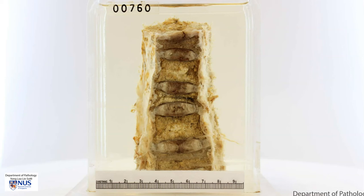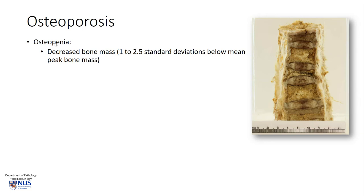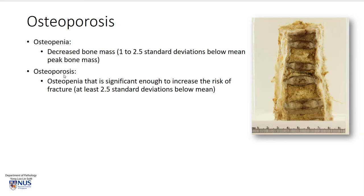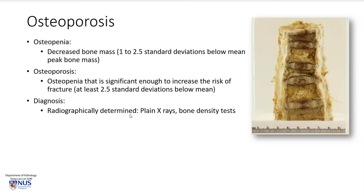Let's take a look at osteoporosis. First of all, let's define the term osteopenia — this is defined as a decrease in bone mass up to 2.5 standard deviations below the mean peak bone mass, which is achieved in young adulthood. Osteoporosis is a more severe form and it's defined as osteopenia that is significant enough to increase the risk of fractures; hence the decrease in bone mass is at least 2.5 standard deviations below the mean. This is usually diagnosed radiographically and if severe enough, it can actually be seen on plain x-rays not only in terms of bone density but also in terms of the shapes of the vertebral bodies, and quantitative bone density tests.